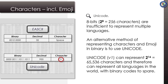One of the main issues with extended ASCII is that it only allows us to represent 256 characters. This is insufficient to represent multiple languages from across the world. An alternative method is to use Unicode, which uses 16 bits for each character, allowing us to represent 65,536 characters.